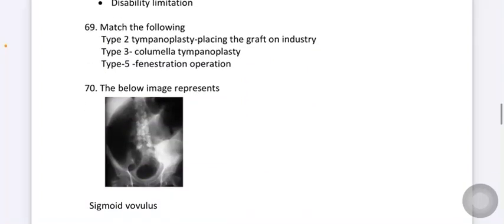Match the following question. Type 2 tympanoplasty is placing of graft on incus. In type 3, it is columella tympanoplasty. Type 5 is fenestration operation.